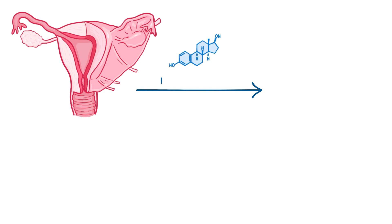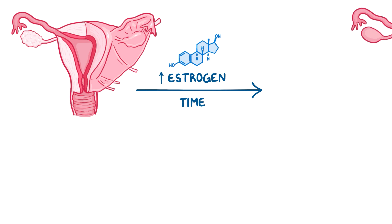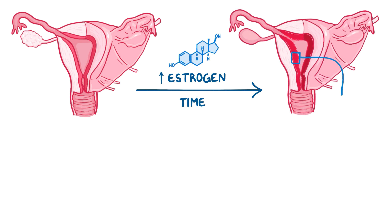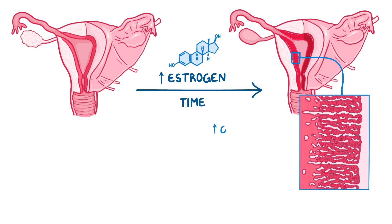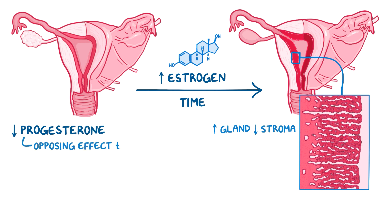Endometrial hyperplasia most often results when the endometrium is exposed to high levels of estrogen for a prolonged time. This leads to excessive growth of endometrial glands relative to stroma, meaning a high gland to stroma ratio. This is also accompanied by low levels of progesterone, which normally has an opposing effect to estrogen.